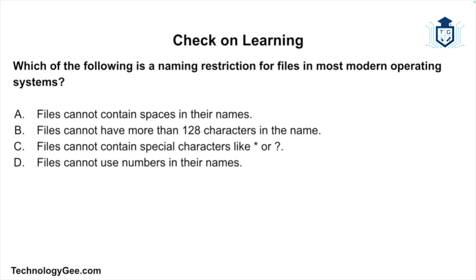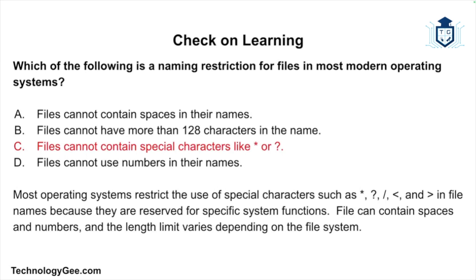Final question: which of the following is a naming restriction for files in most modern operating systems — files cannot contain spaces, files cannot have more than 128 characters, files cannot contain special characters like the asterisk or question mark, or files cannot use numbers in their names? The correct answer is files cannot contain special characters like the asterisk or the question mark, because they are reserved for specific system functions. Files can contain spaces and numbers, and the length limit varies depending on the file system.